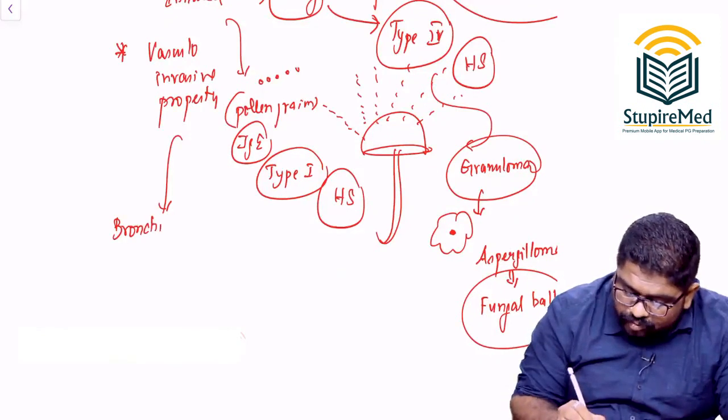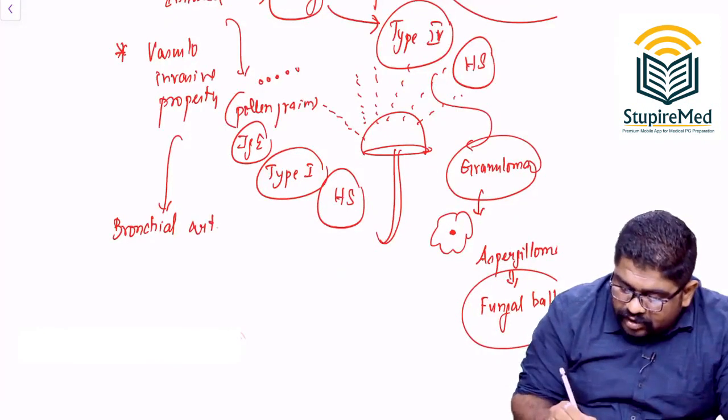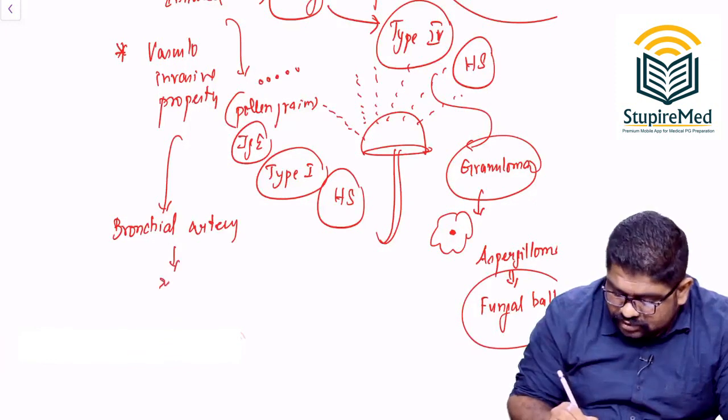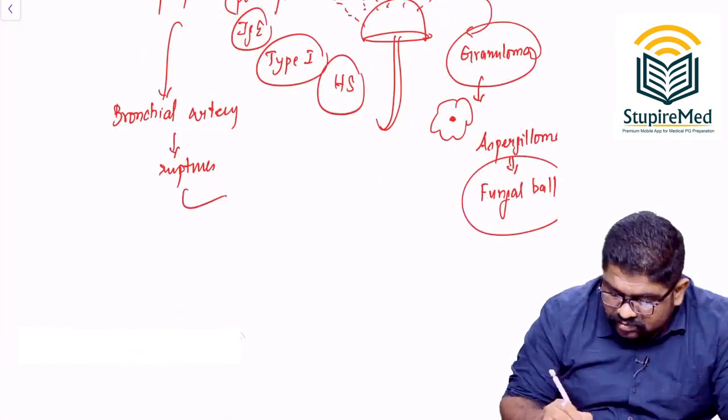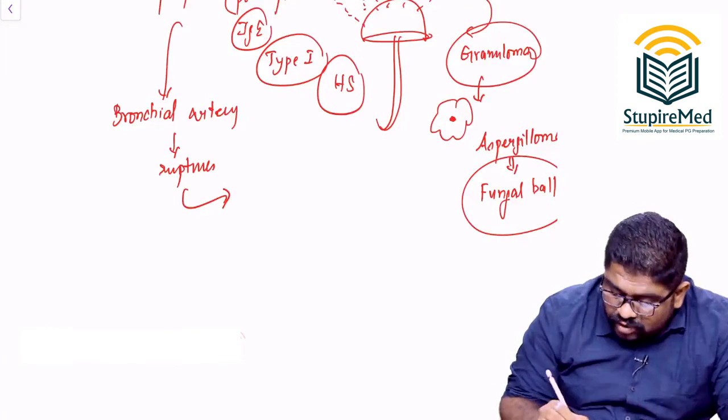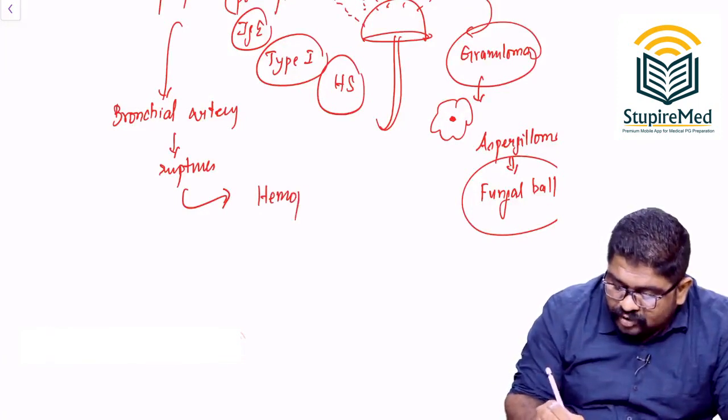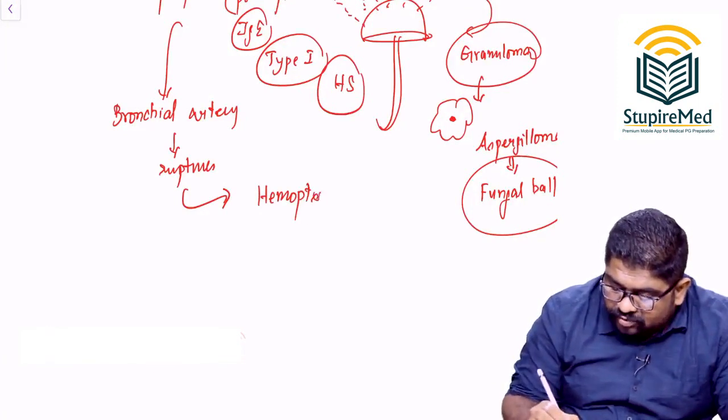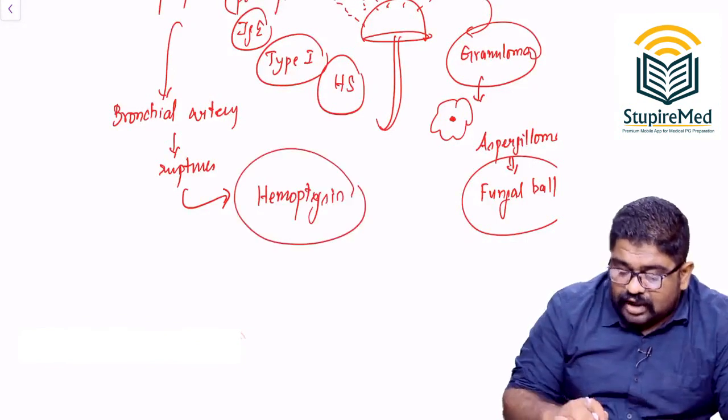Which blood vessels am I talking about? It can go through the bronchial artery. And if the bronchial artery ruptures, then bleeding can happen into the mediastinum. The patient can go for hemoptysis. So the fungus capable of causing hemoptysis would be Aspergillus.